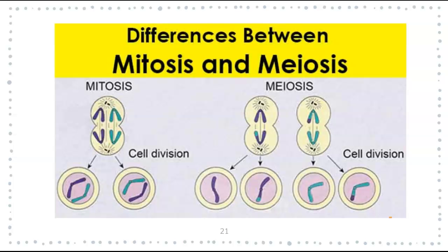Just to wrap it all up: in mitosis you start with a cell that has 46 chromosomes and at the end you have two cells with 46 chromosomes. In meiosis, you start with a cell with 46 chromosomes and you end up with four cells that have 23 chromosomes. Mitosis produces identical daughter cells. Meiosis produces non-identical daughter cells — they're not identical because they have different DNA; in fact, they have half the DNA. Hopefully this helped you understand a little bit more about the process, and we will go through things together in class.